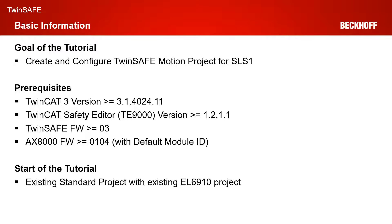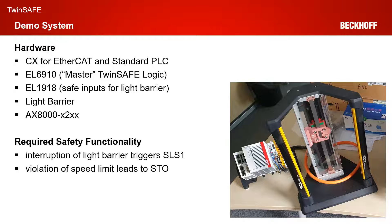Looking at our demo system shown in the picture on the right, we have a CX for the EtherCAT communication and the standard PLC task. We have an EL6910 as the master TwinSafe logic. At the end of the tutorial, we want our AX8000 communicating with this EL6910 as master TwinSafe logic. We have an EL1918 for the safety inputs within our system, with a light barrier connected to the EL1918. And of course, we have an AX8000 X2XX in the safe motion version.